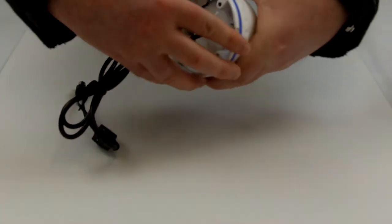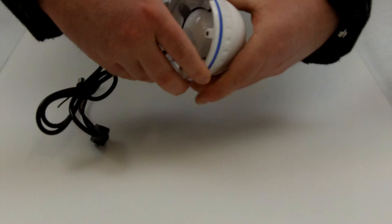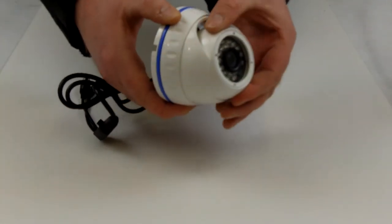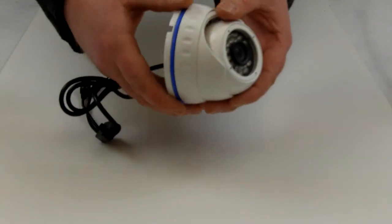Once done, just simply screw the camera back onto the base and point it in the direction you want. As you can see, once you loosen the base the camera becomes loose and can be pointed in the direction that you want.